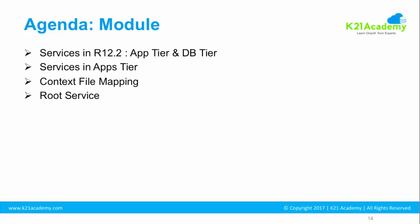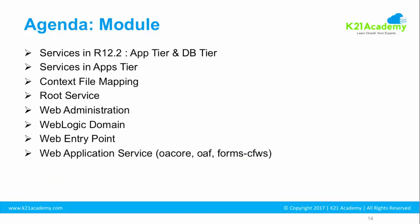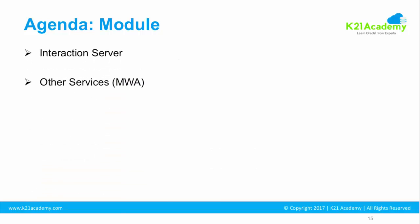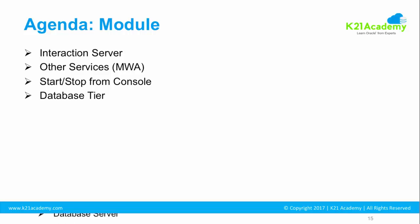Then we'll look at root service, which is newly introduced in R12.2. Then web administration service — what WebLogic domain means and the administration part within that WebLogic domain. Then web entry point, web application services specific to OA core, OAFM, Forms, C4WS, and batch processing concurrent manager tier. Then fulfillment server, interaction server (IOE server), other services including mobile MWA, how to start and stop from the WebLogic admin console in EBS R12.2, and finally database tier services including the database server and database listener.